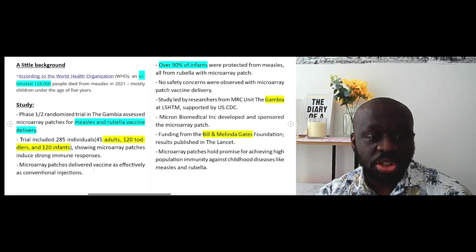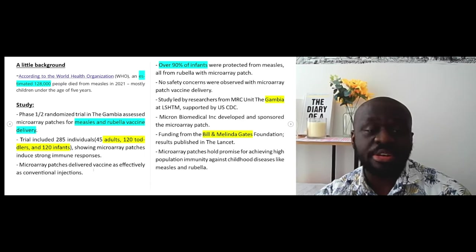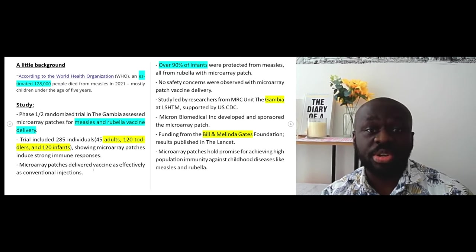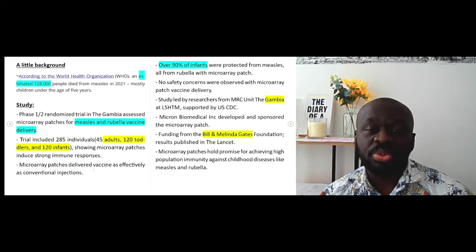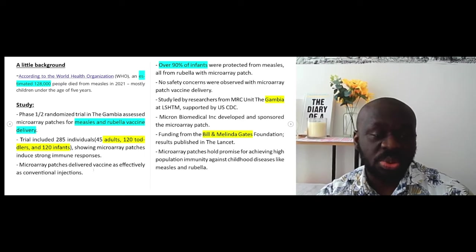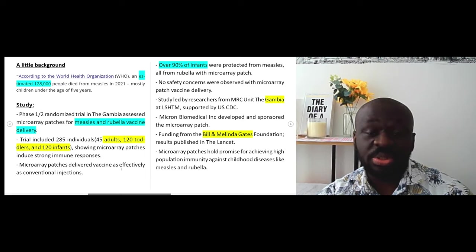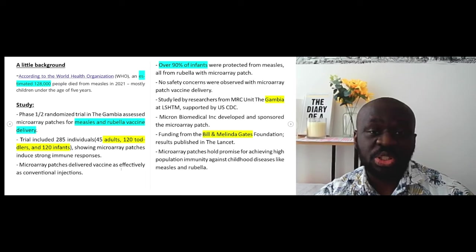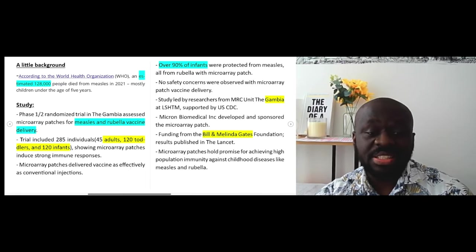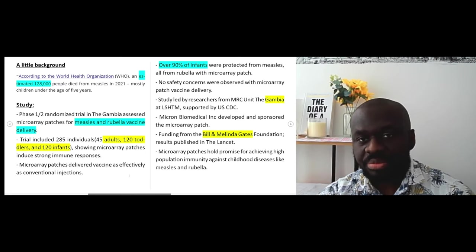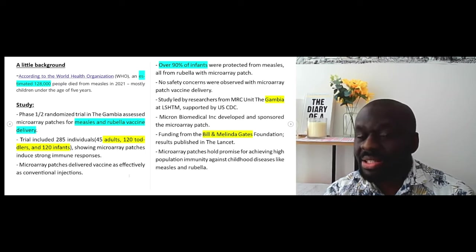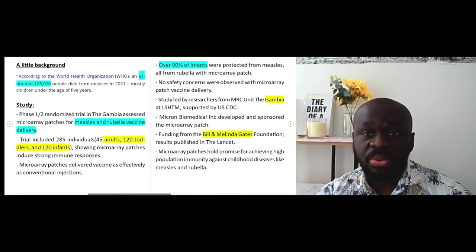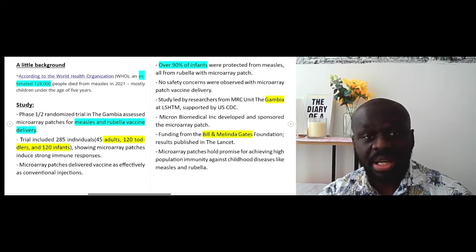And so this trial showed that these microarray patches actually induced a very strong immune response. So when vaccines are delivered into the body, what we're looking for is an immune response. We're hoping that the body builds antibodies, build T cells, to protect ourselves against any further exposure to that antigen or that virus or bacteria. So that's the essence of vaccination or immunisation. So the study actually showed that this mode of delivery did what it was meant to do or what it was being proposed to do. So the microarray patches delivered vaccines effectively as the conventional injection, which is what we're trying to achieve. Now, over 90% of the infants were protected from measles and all the infants were protected from rubella. So that's very significant. Everyone, 120 infants in the study were protected from rubella. That's something that is very important to note.